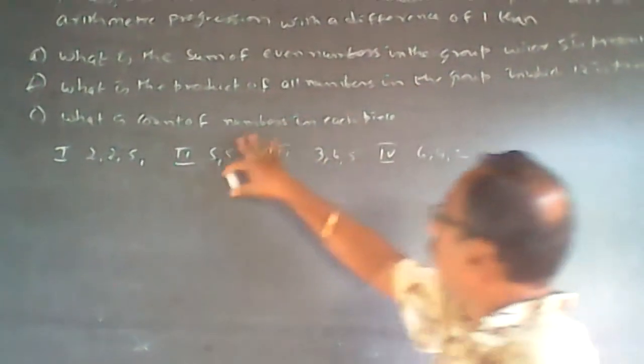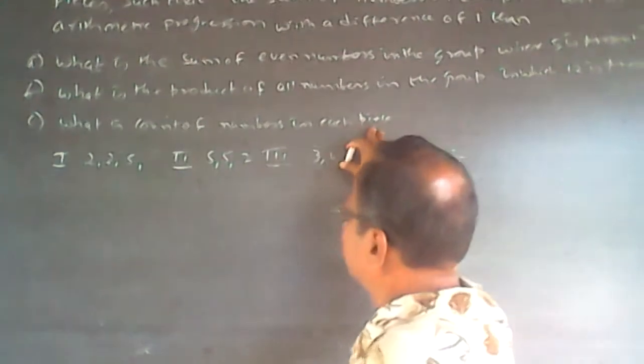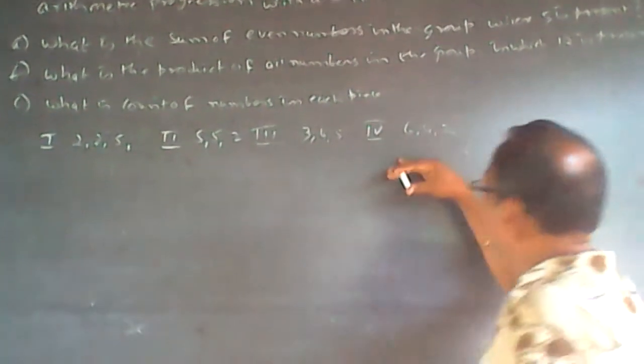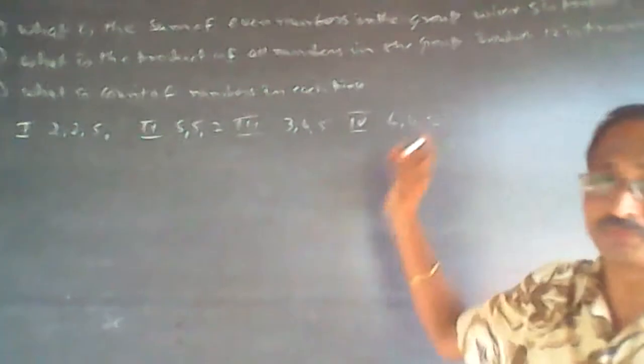C: What is the count of numbers in each piece? The options are 225, 552, 345, and 645.